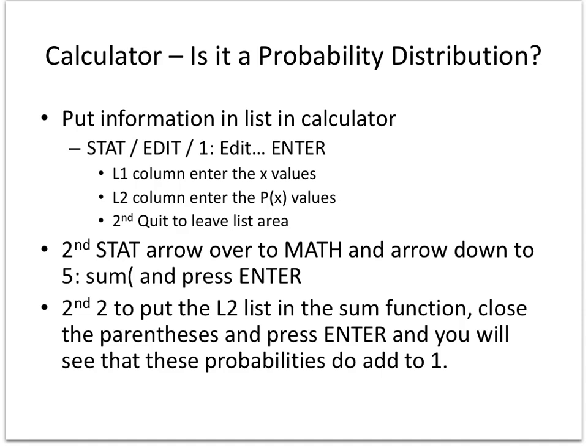Now you can certainly do this with a calculator. It does take a little time, because you have to enter all the information into the calculator. So you do the stat edit, one edit, to go to a list, and then in the first column, add all of the x values. In the second column, add all the probability values. Then do second quit to leave this area.